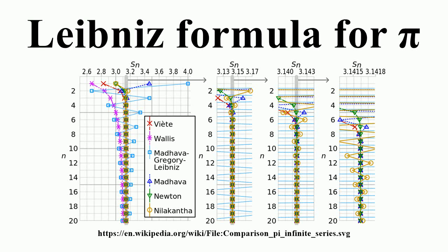See list of things named after Gottfried Liebner's for other formulas known under the same name. In mathematics, the Liebner's formula for pi, named after Gottfried Liebner's, states that using summation notation.